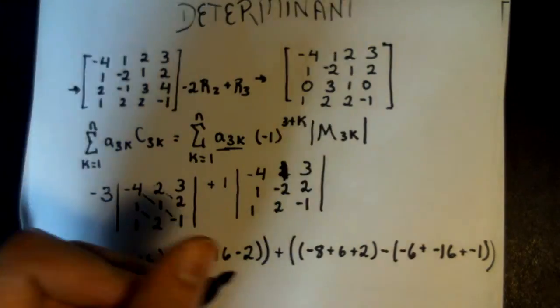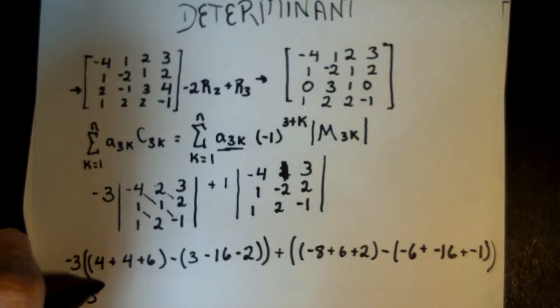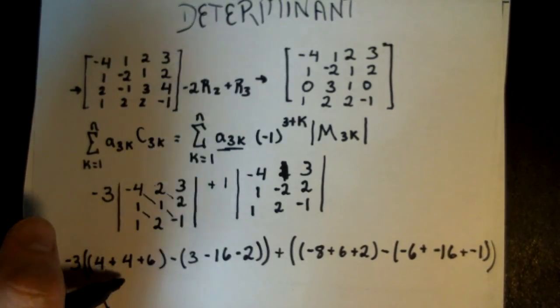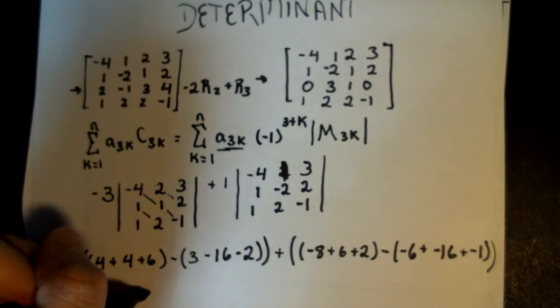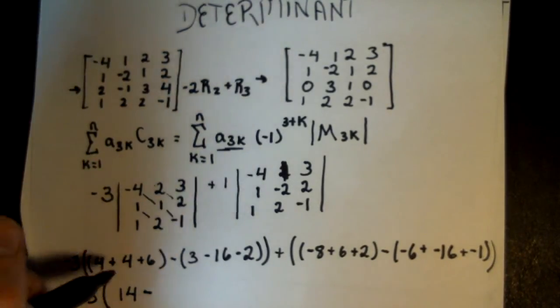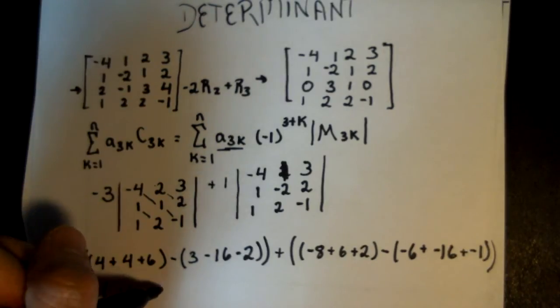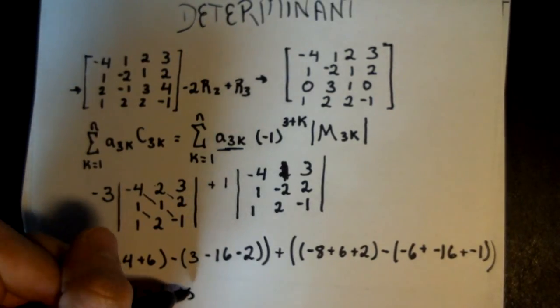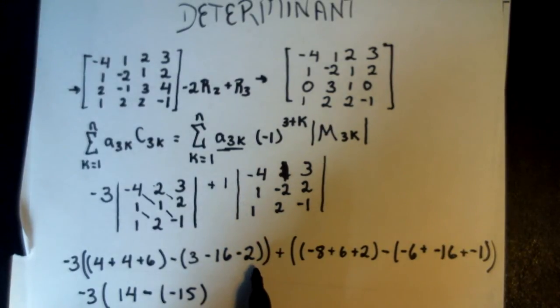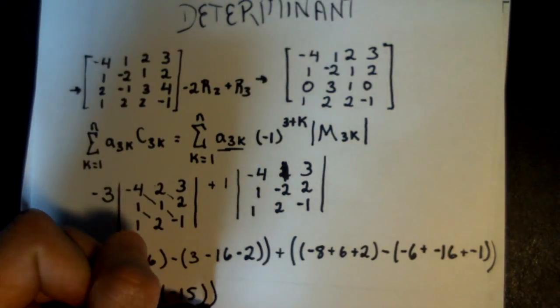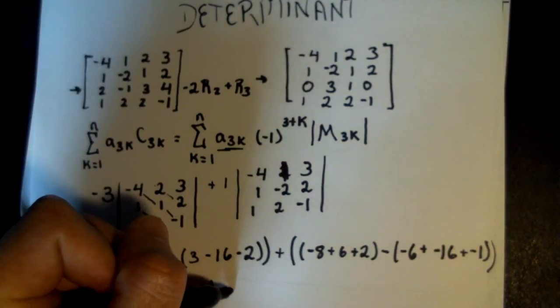So we now have negative 3. Let's simplify. 4 and 4 is 8, and 6 is 14, minus negative 15. I believe, because we have negative 16 plus negative 2. That's negative 18, and then 3 is going to make it negative 15.